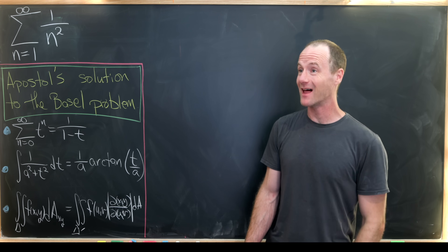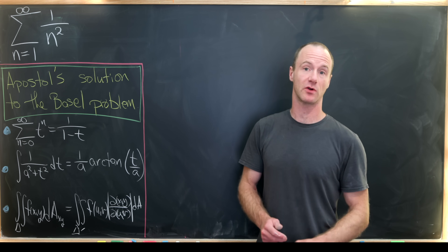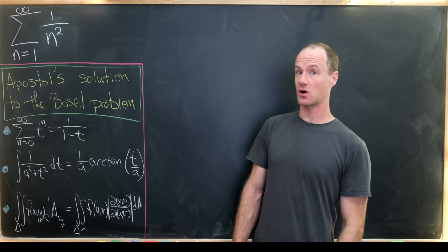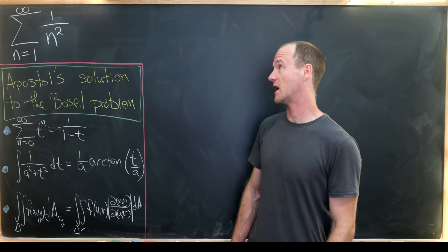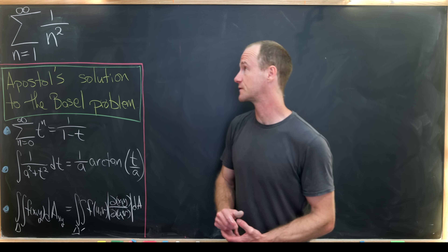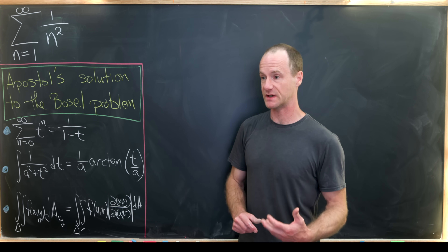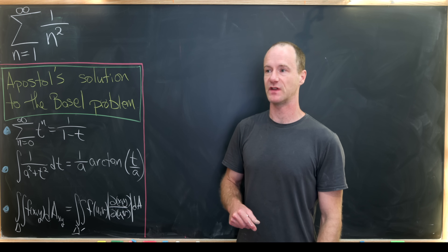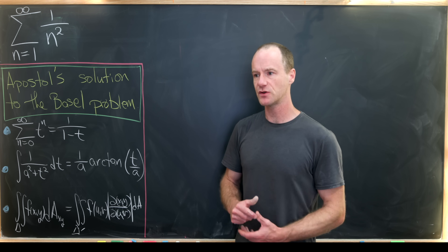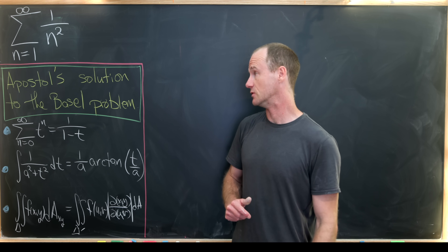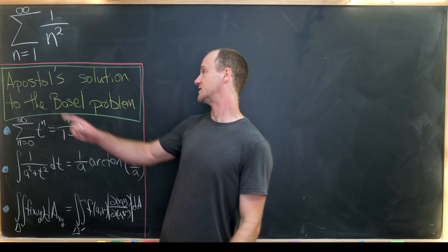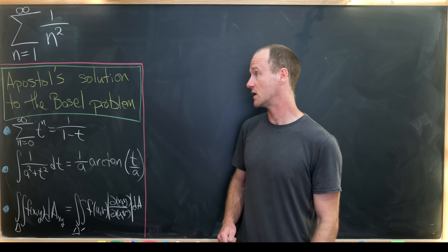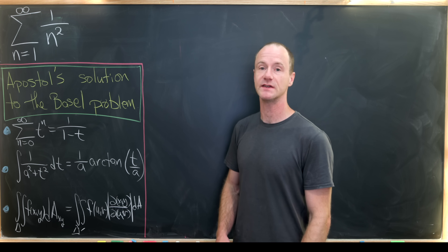I just learned about a fairly elementary solution to the Basel problem, so I thought I'd make a video about it. The Basel problem is to find a closed form for the sum as n goes from 1 to infinity of 1 over n squared — the sum of reciprocals of squares of the natural numbers. This is also the Riemann zeta function evaluated at 2. This solution is due to Apostol, who has a pretty famous calculus book.